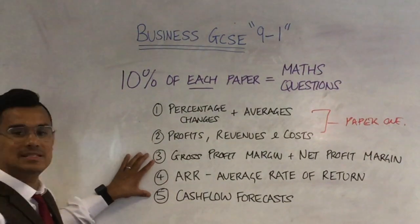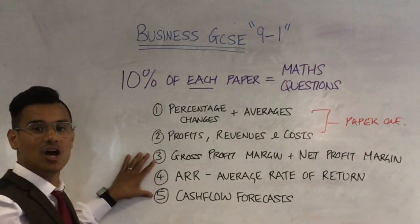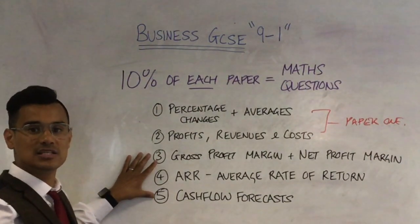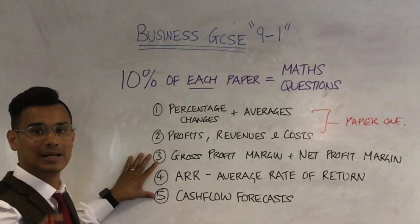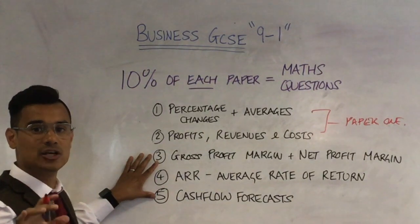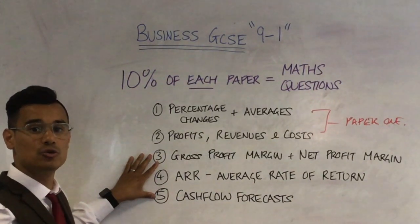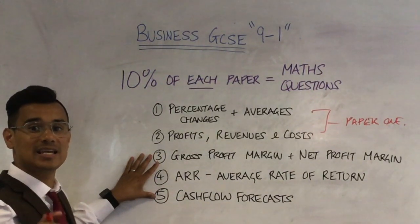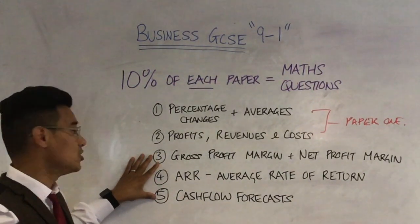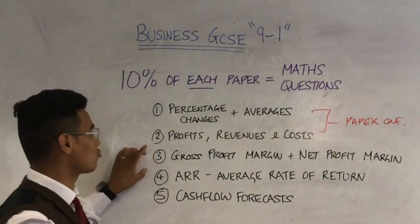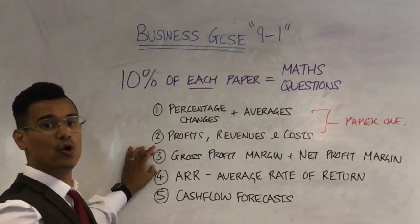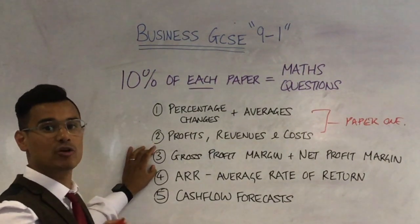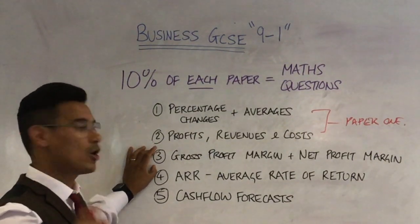I think these next three are the type of maths you're going to see on paper two, because they're directly related to unit six, the finance unit. And that is gross profit margin — be ready for a gross profit margin question.